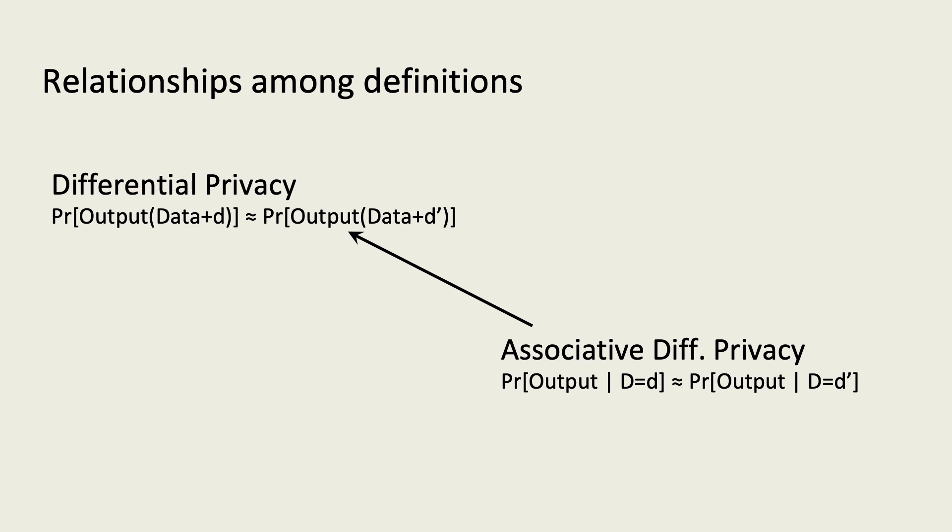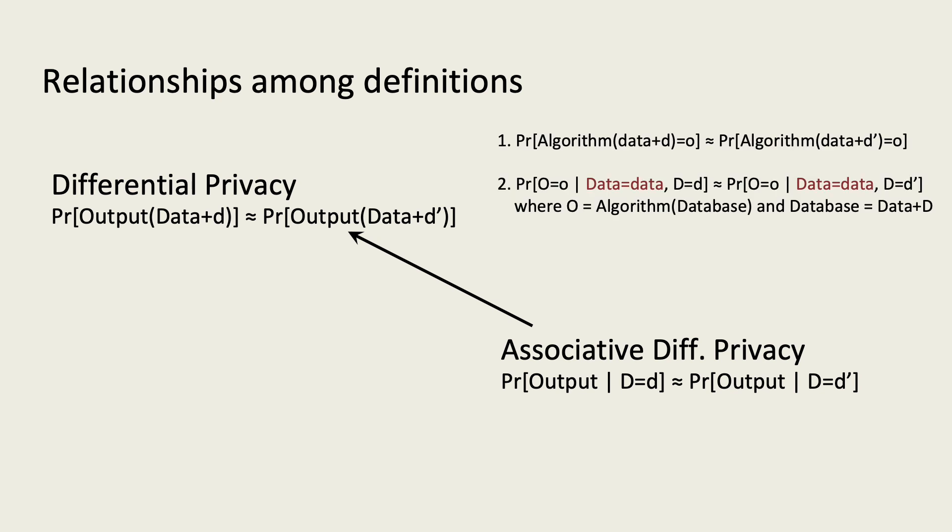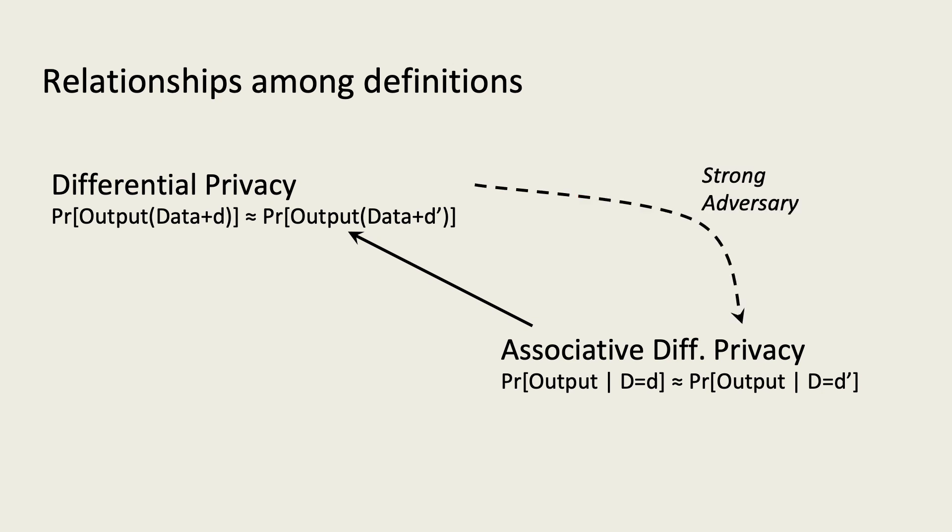To get from differential privacy to associative differential privacy requires making an additional assumption. One assumption already suggested by a rewriting of differential privacy to use random variables is conditioning upon not just the changed data point, but all of the data points. This is called the strong adversary assumption, since it can be thought of as assuming that the adversary already knows the value of every data point, except for the changed one. This assumption allows differential privacy to imply associative differential privacy, since it shuts down the double flow of information explored in our example.